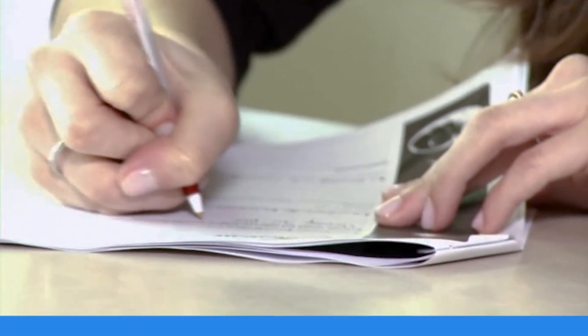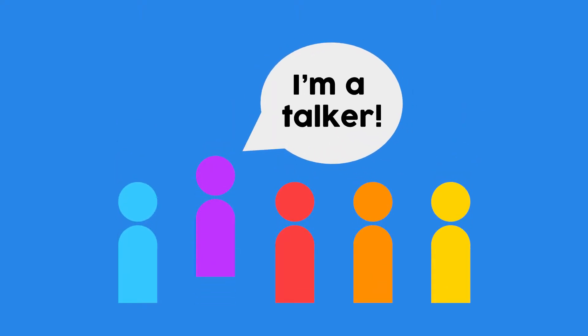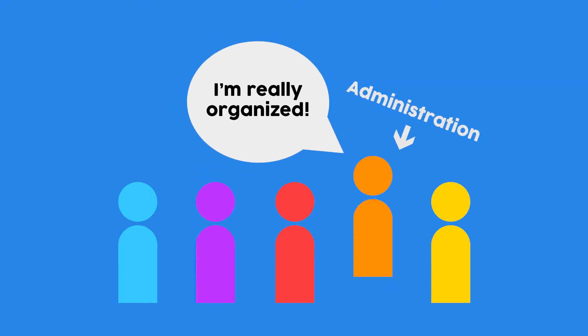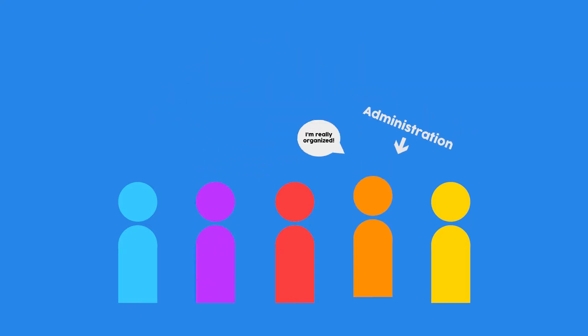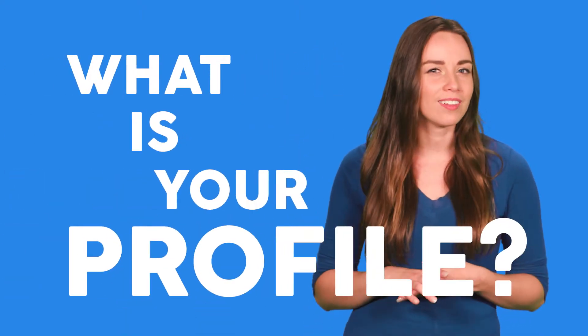Before you start, you need to figure out what you're going to be doing in the project. This is the who is who. In every project or company, different people play different roles. So if you like to talk and get people's attention, then you're made for public relations. If you're really organized, you'll probably be good at administration. This part is about finding out who you are on the team.